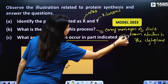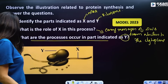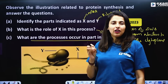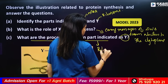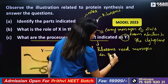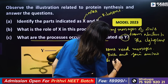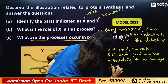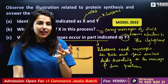What are the processes indicated as Y? Y is the result of translation — the ribosome reads the mRNA message and joins amino acids according to the message to form protein.